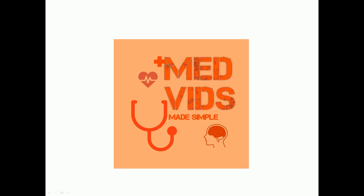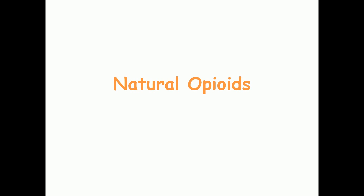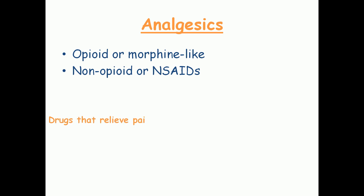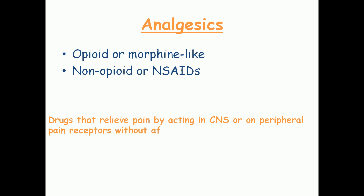Welcome back to Med Made Simple. In this video we're going to look at natural opioids such as morphine, which are very important analgesics. Analgesics are classified into opioid or morphine-like analgesics, and non-opioid or NSAIDs which are nonsteroidal anti-inflammatory drugs. Analgesics are drugs that relieve pain by acting on the central nervous system or on peripheral pain receptors without affecting consciousness.